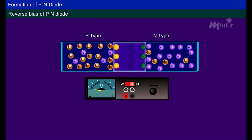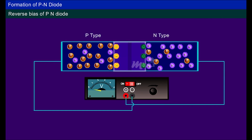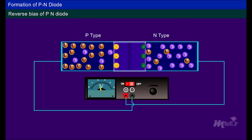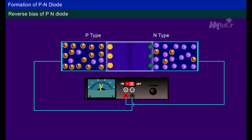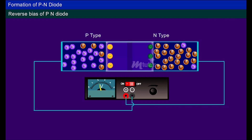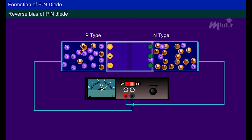Reverse bias of the P-N diode: when the negative terminal is connected to the P-type and the positive terminal to the N-type of the diode, it is reverse biasing. As the applied voltage increases, the negative terminal attracts the holes in the P-region, and the positive terminal attracts the free electrons in the N-region away from the junction. The depletion region widens and barrier potential increases, creating more positive ions in the N-region and more negative ions in the P-region. As reverse bias voltage increases, minority carriers — electrons on the P-side and holes on the N-side — start to move towards the respective polarities, constituting current in reverse bias condition.